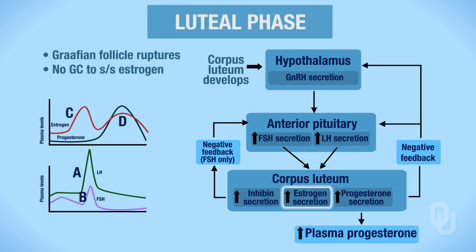Here we see an increase — follow the red line — in estrogen that's caused by the corpus luteum. We also have an increase in progesterone secretion that I'm going to illustrate using E, so we follow the large increase in progesterone. That's caused by the corpus luteum, which is now synthesizing and secreting progesterone as well as estrogen.